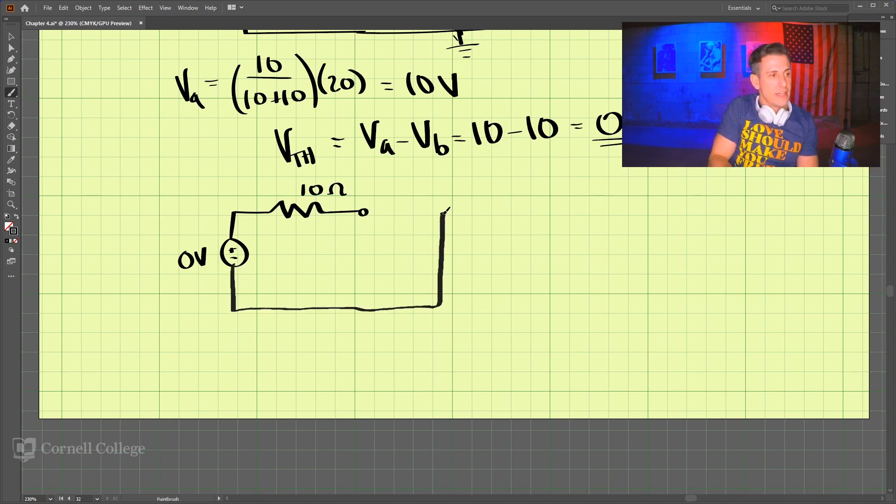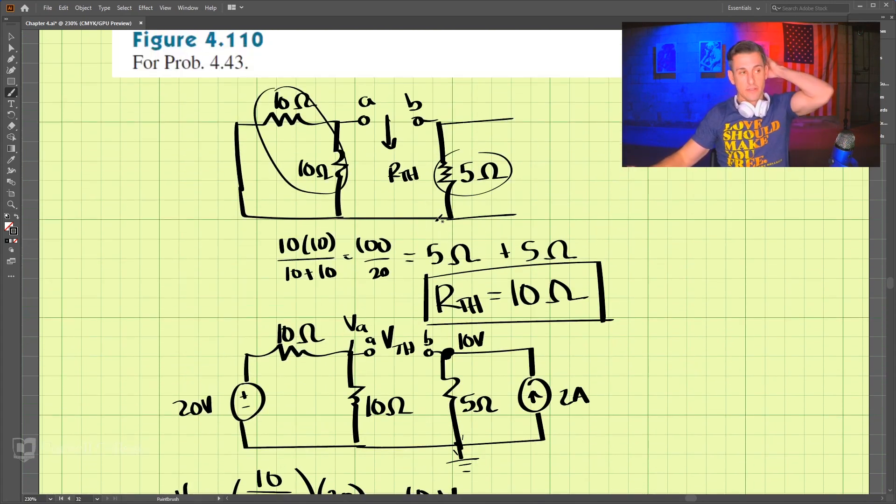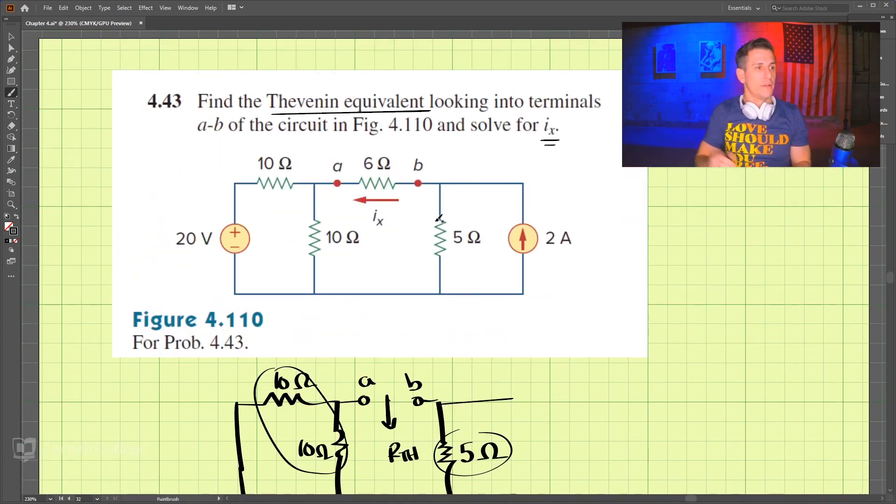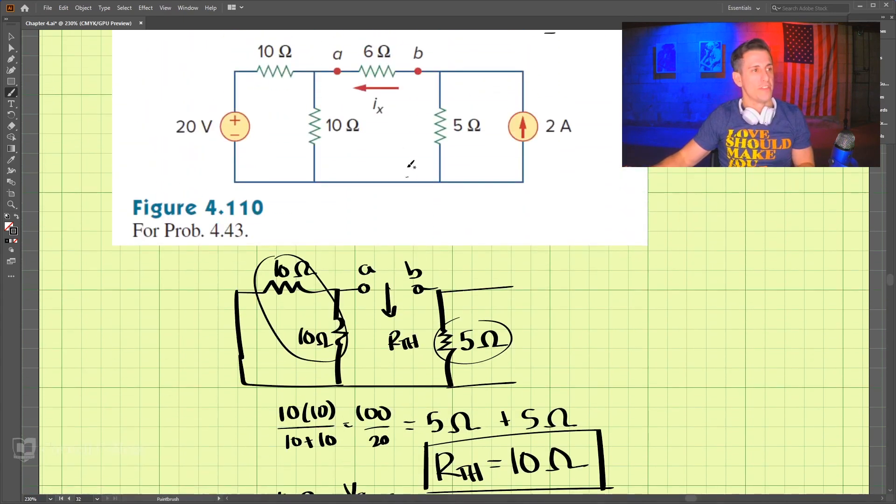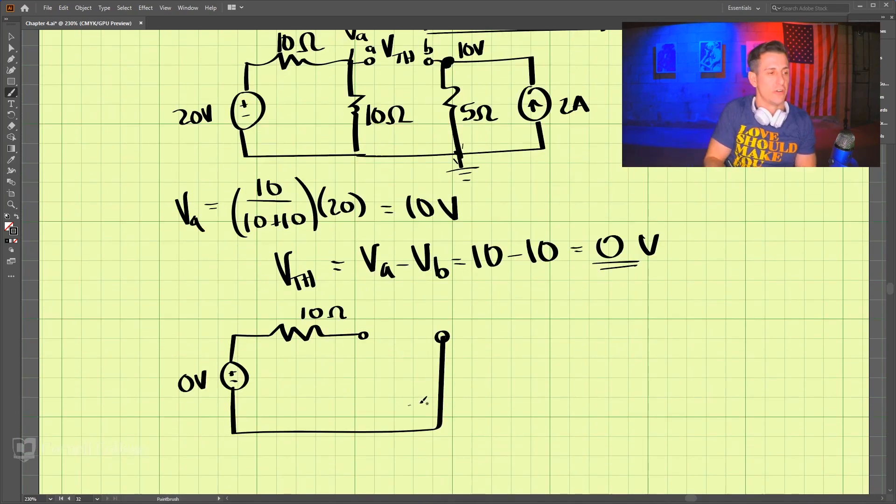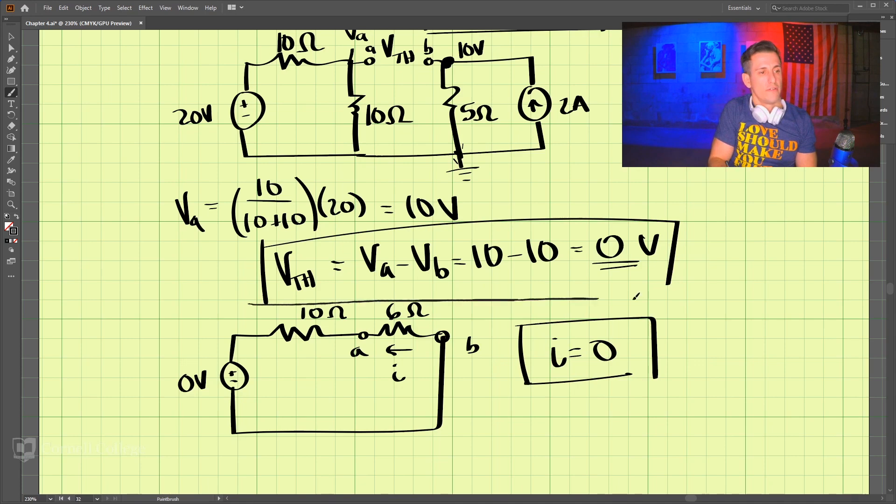it wants us to find Ix here, with this 6 ohm resistor in here. So if this is 6 ohms, A and B, it wants us to find this I. Well, if we have 0 volts here, I is equal to 0. So this is our solution for problem 443.